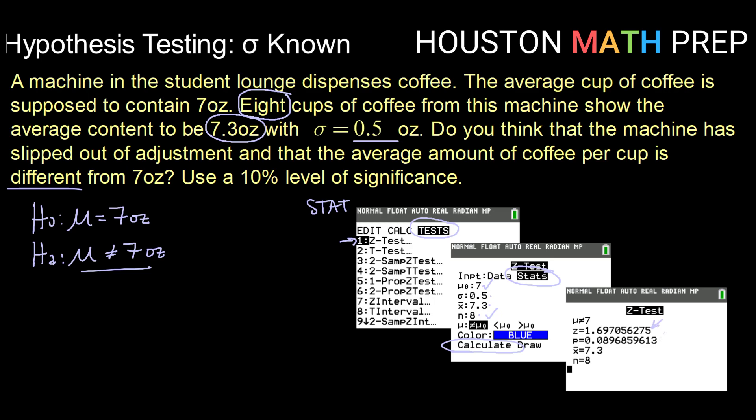So here it's going to give you your test statistic or your z star. So if we were doing the rejection region method, that would be what we get. And then it's going to give us a p-value. So here our p-value is 0.0897, if I was rounding.